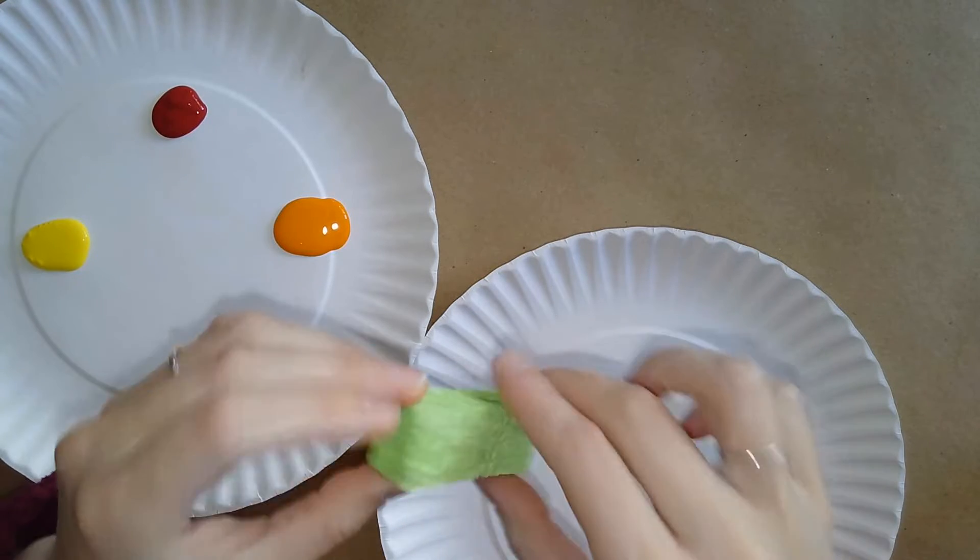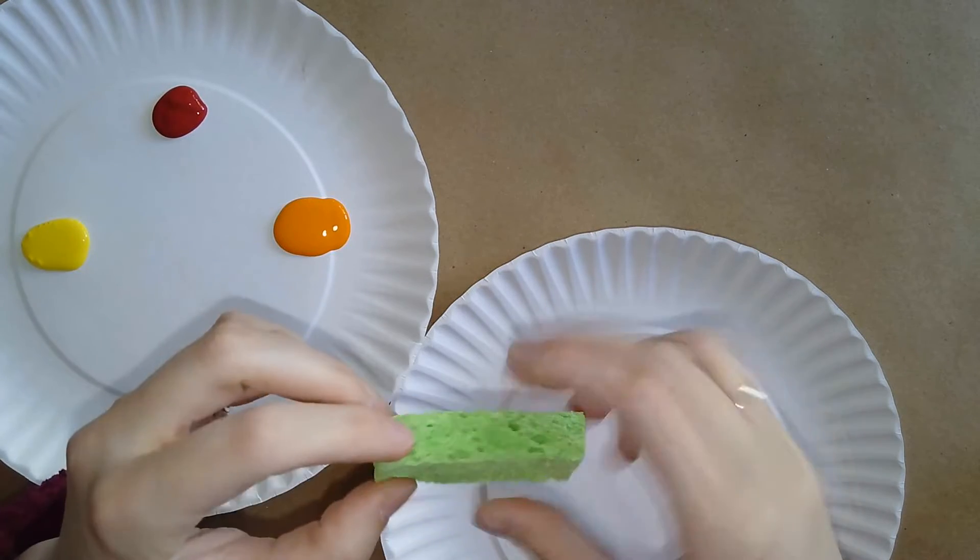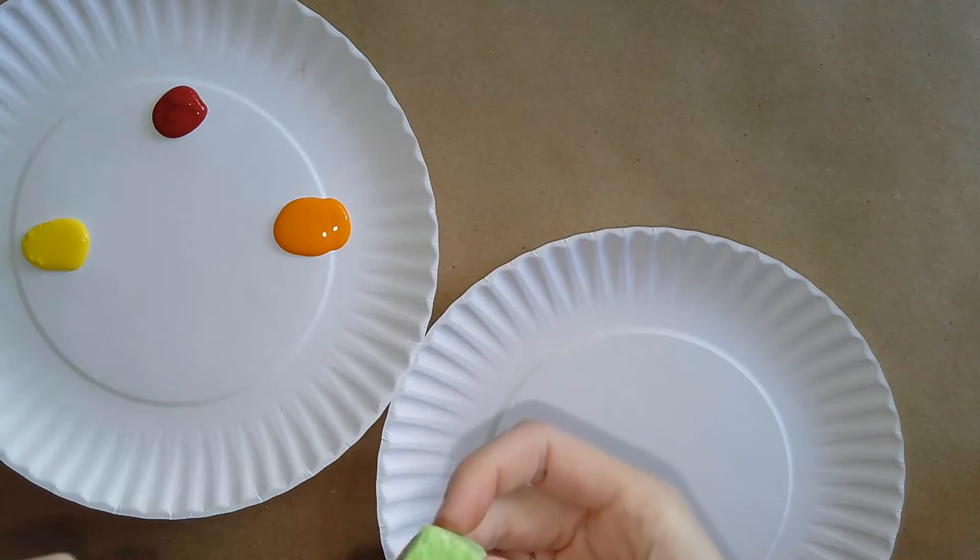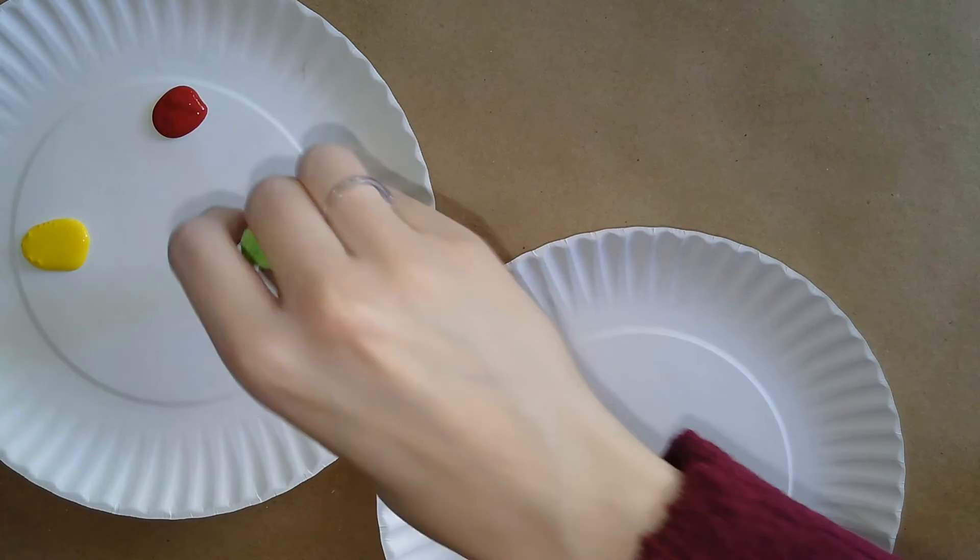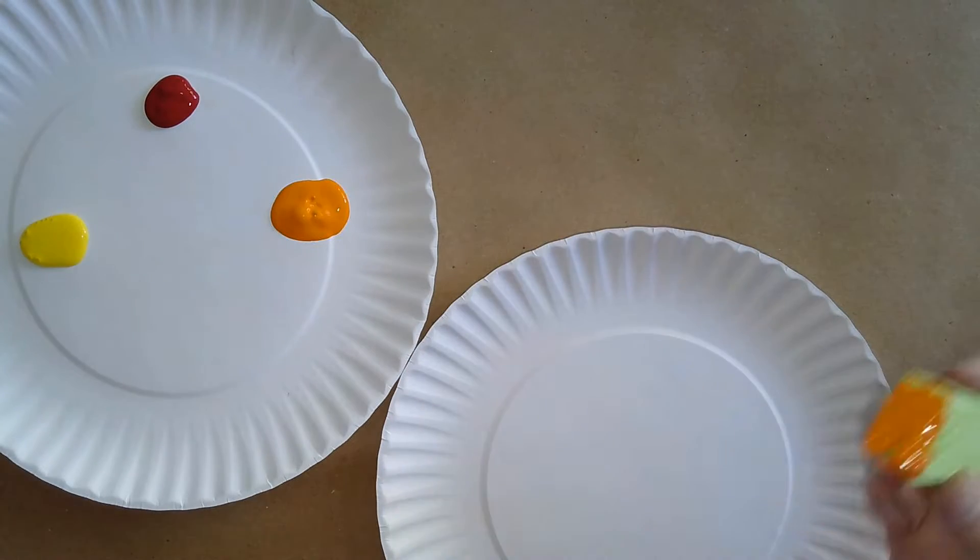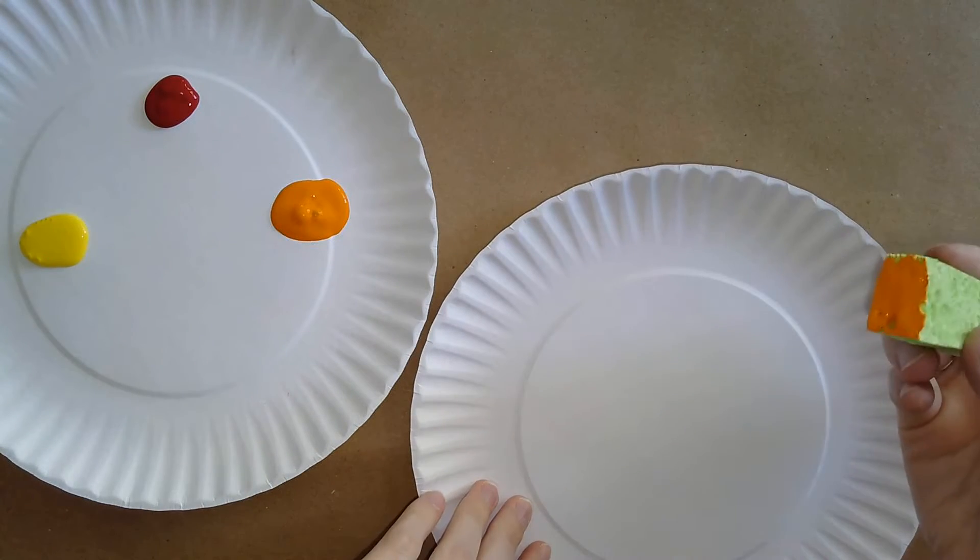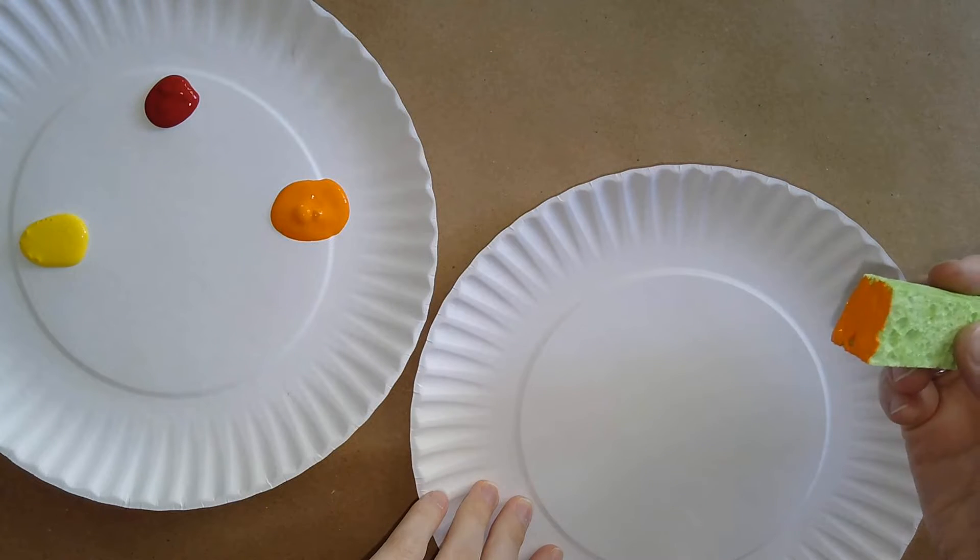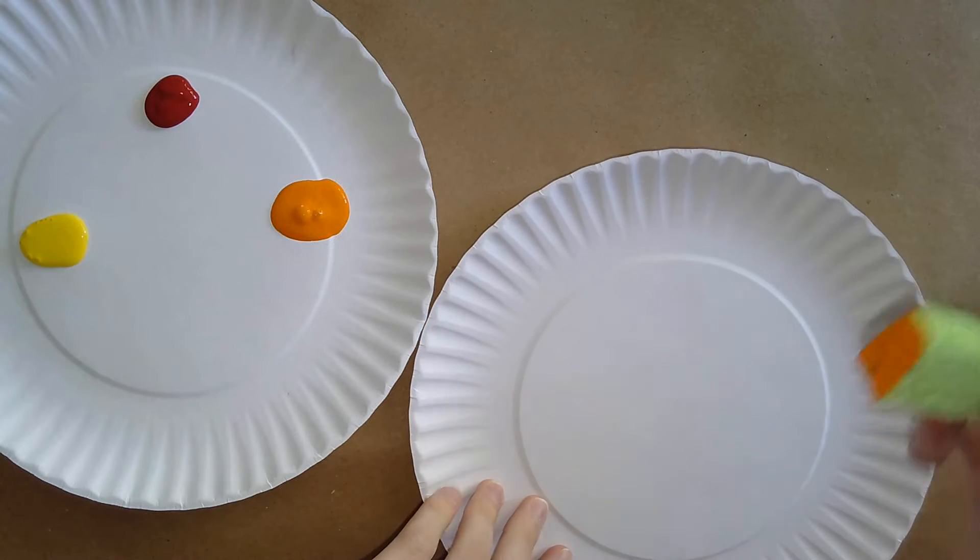You can take whatever side of the sponge you like, the wide side or the narrow side. I'm going to take this smaller side, put some paint on it. Then you can just use the sponge to put the paint for each color wherever you like, all over the plate.